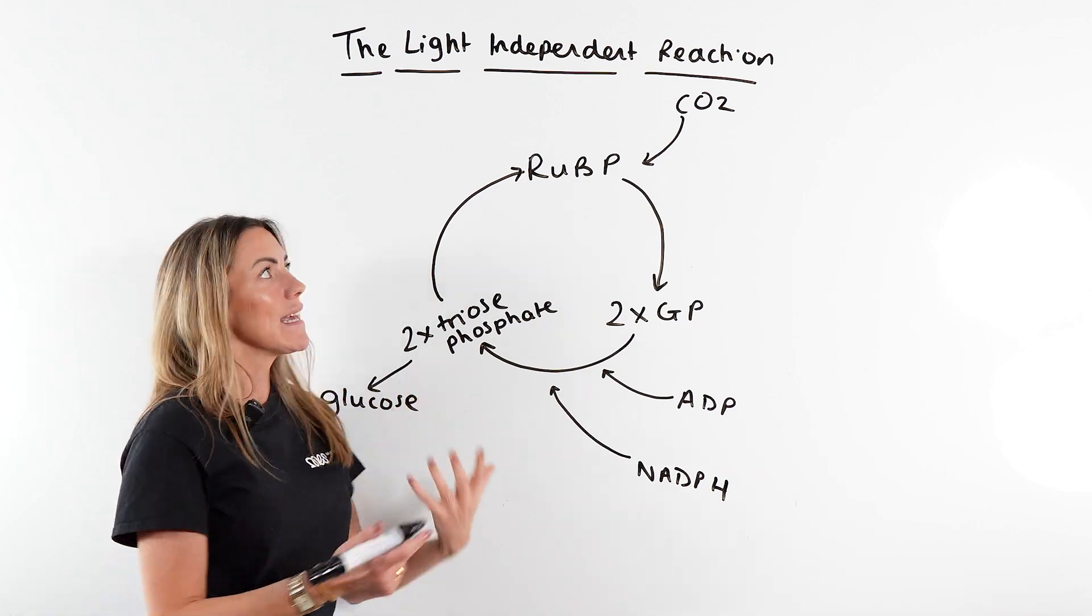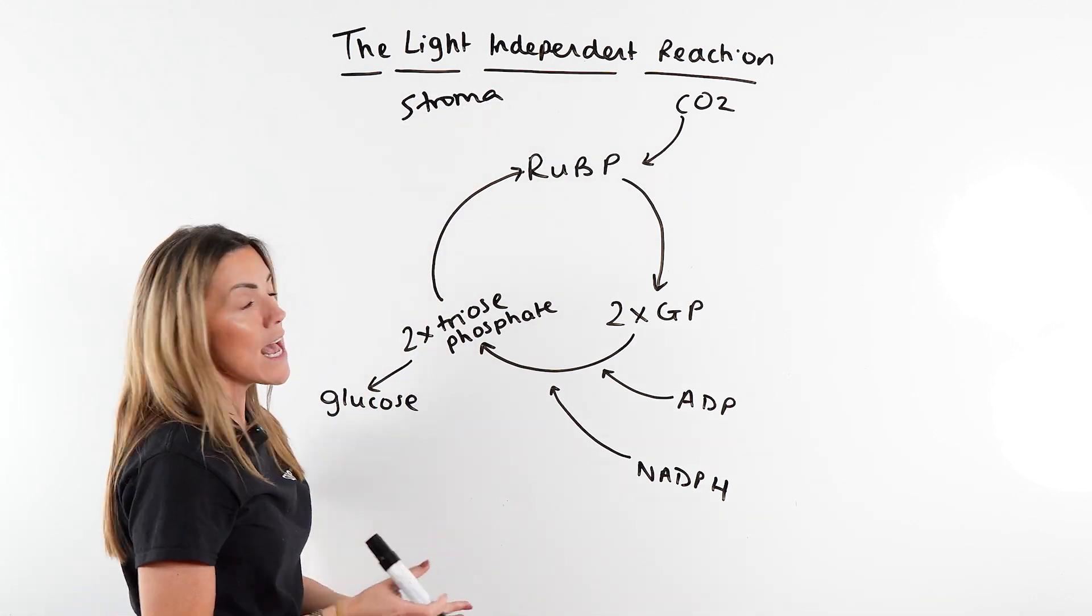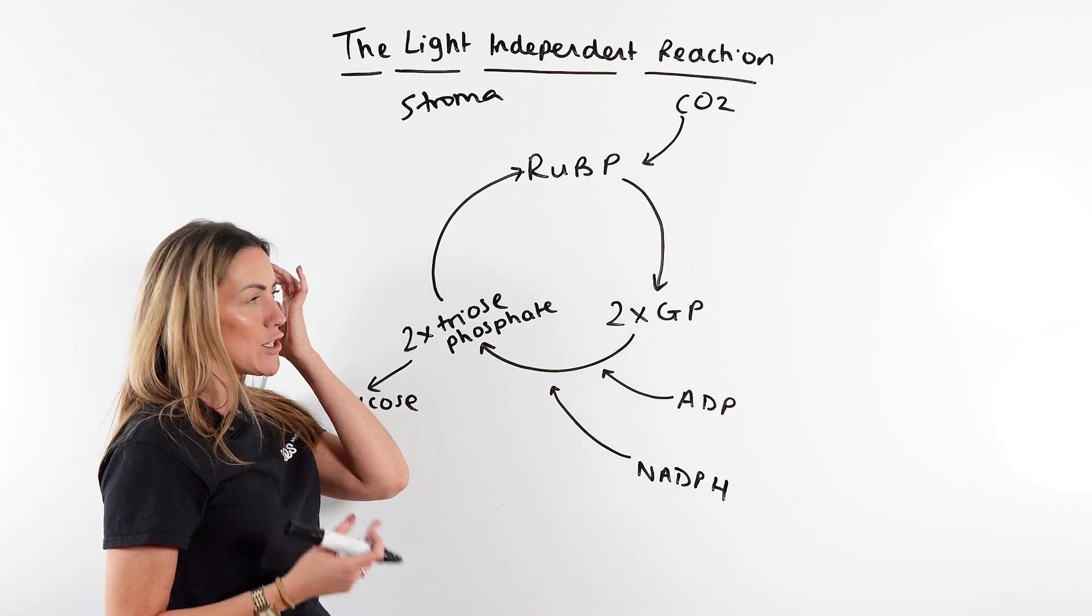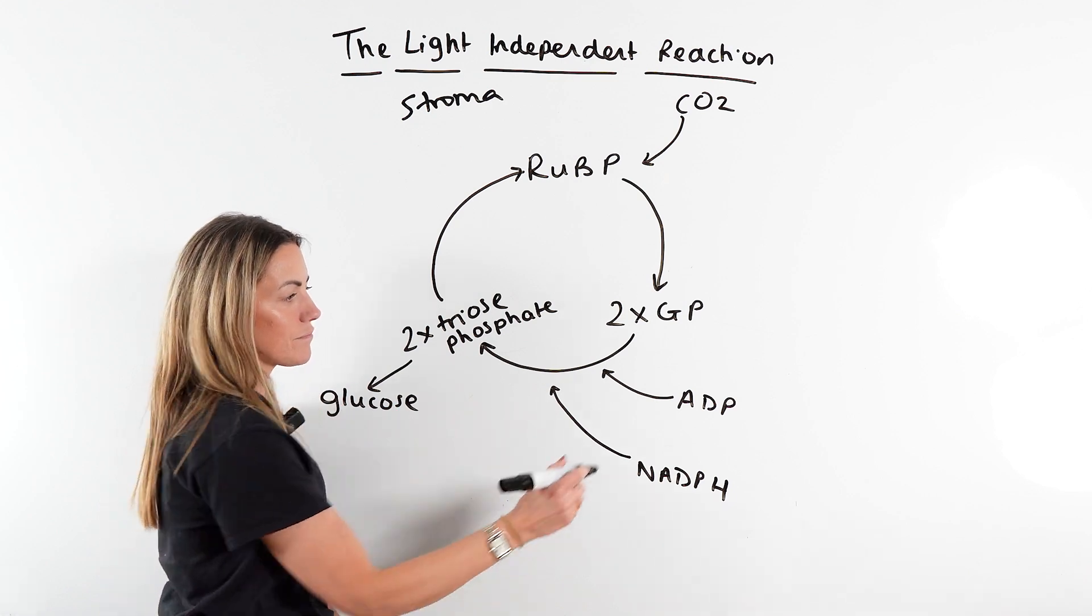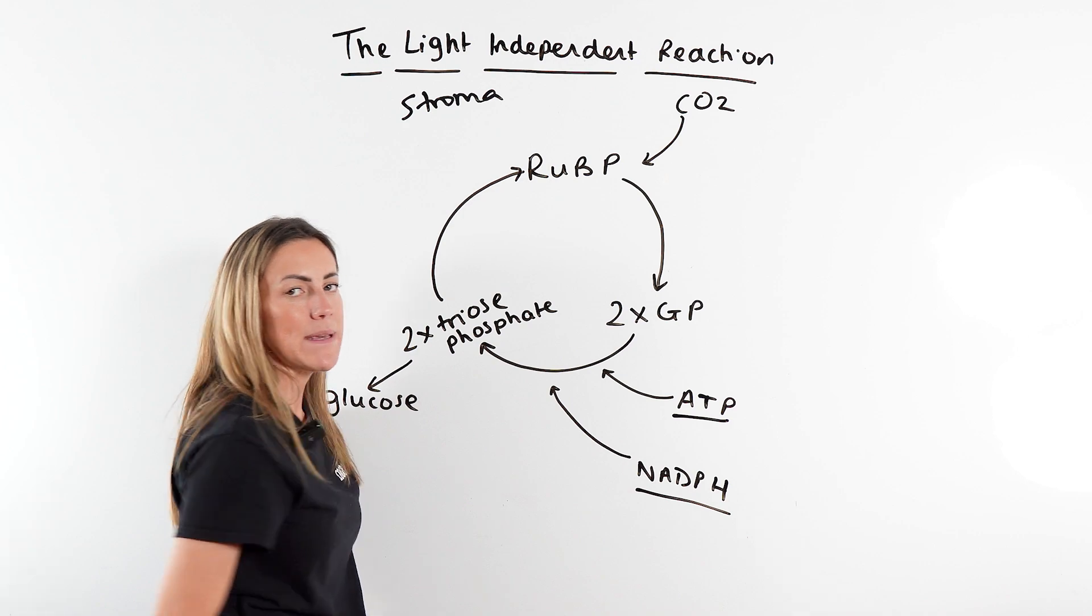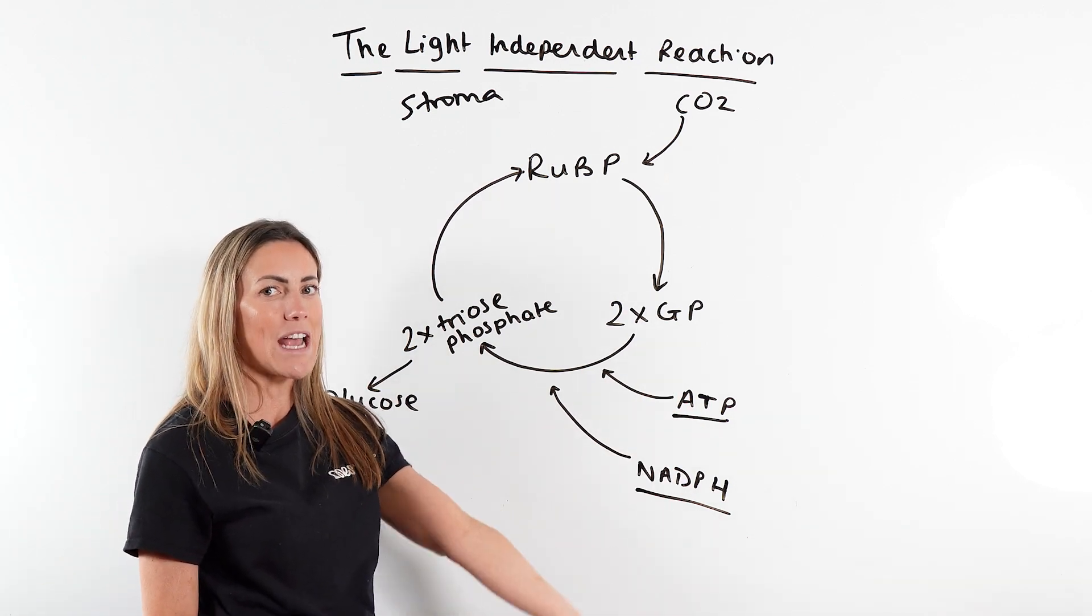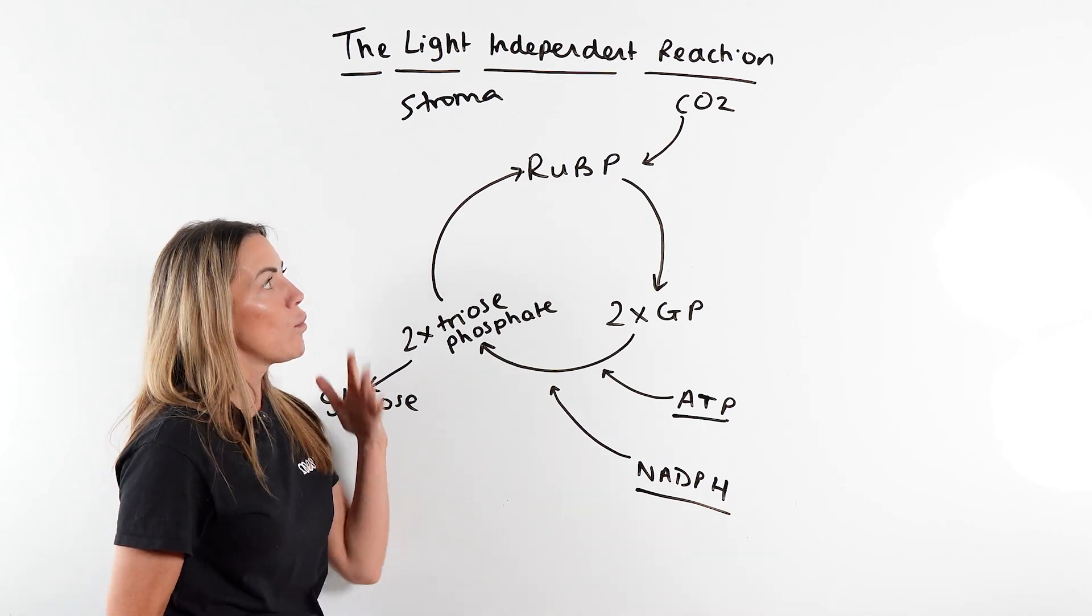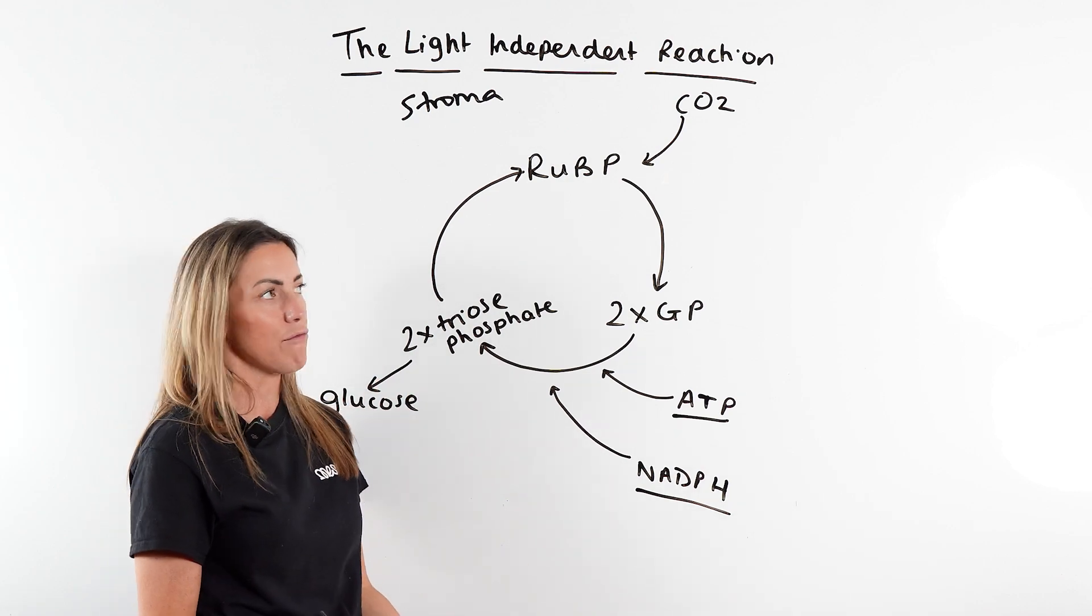But this is happening in the stroma. Let's just start with the basics. This is the second stage of photosynthesis. Now this doesn't directly require light, but it does require ATP and NADPH, so it does require the products of the light dependent reaction. So indirectly it is relying on light. But we're in the stroma, it's the second stage of photosynthesis, the Calvin cycle or the light independent reaction.